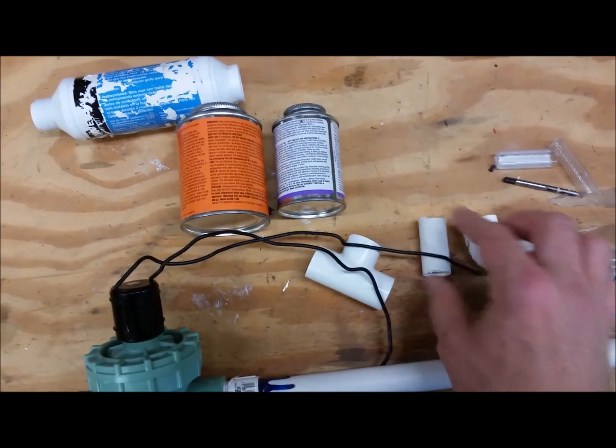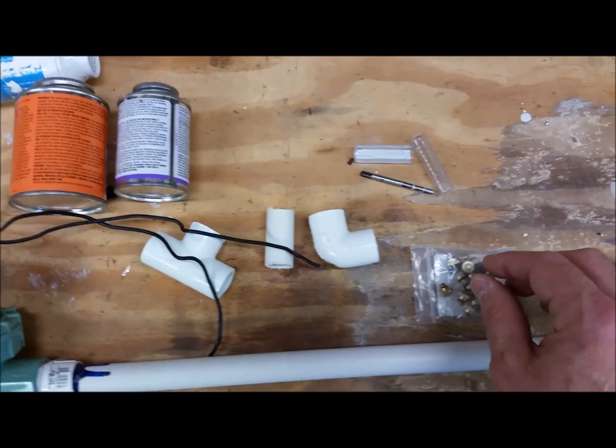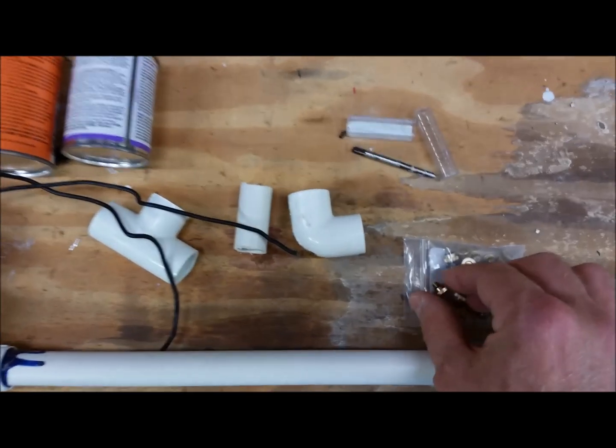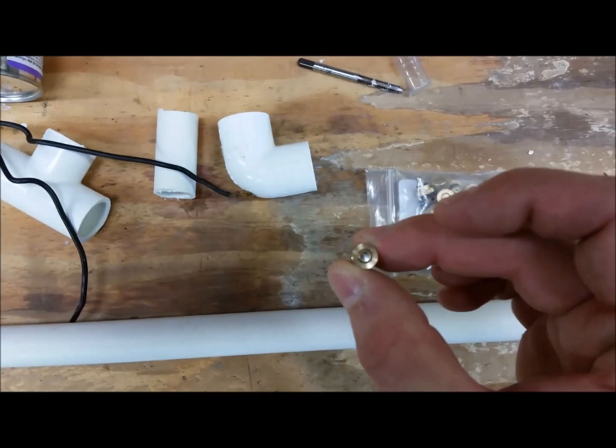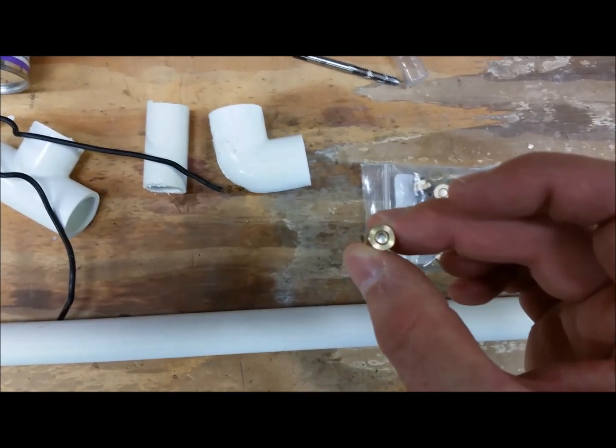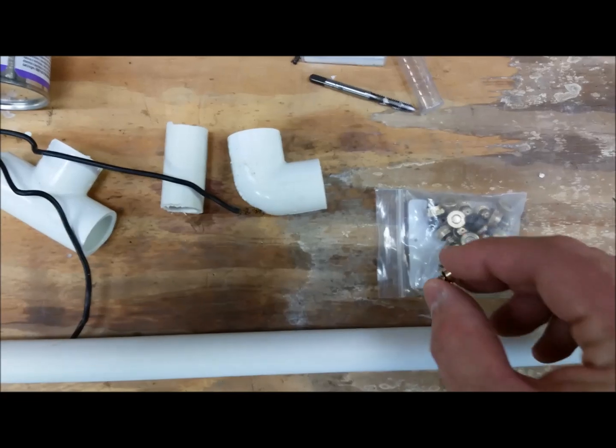Fittings, couplings, elbows, and then this thing right here is your mister. I'll try to zoom in on that. You can get these from Amazon, a pack of 30, I think maybe 15 bucks or something like that.